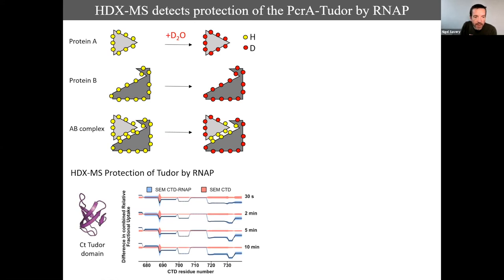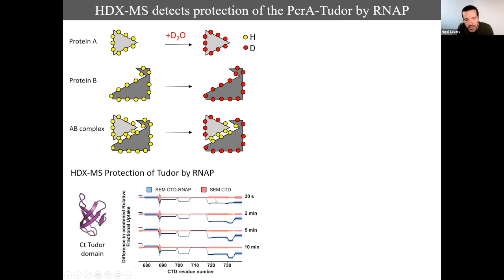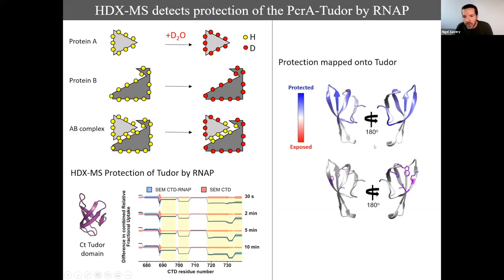The C-terminal domain of PcrA is essential for interaction with RNA polymerase — it's a Tudor domain, the same fold used by MFD to bind RNA polymerase. HDX-MS of the CTD binding to RNA polymerase showed that large parts of this small domain are protected when it binds, mapping to one particular surface. These residues had already been identified as important for this interaction, confirming the experiment works.